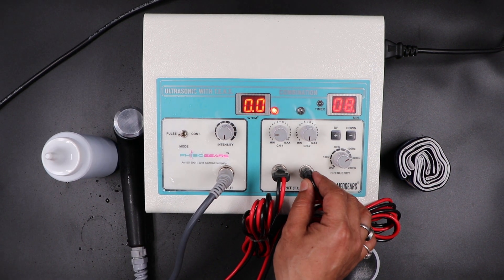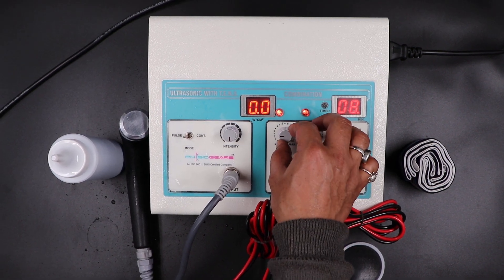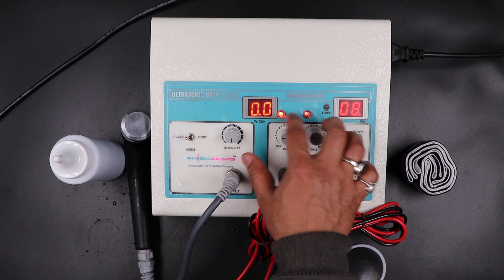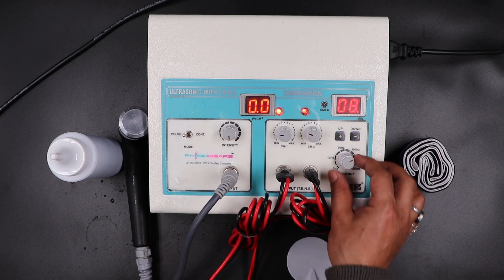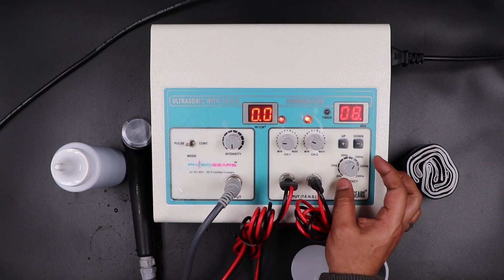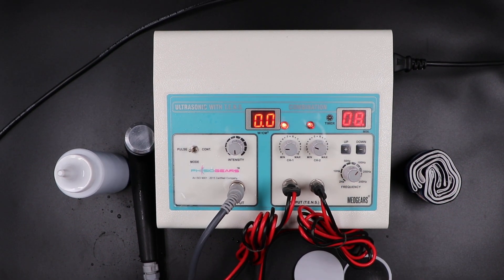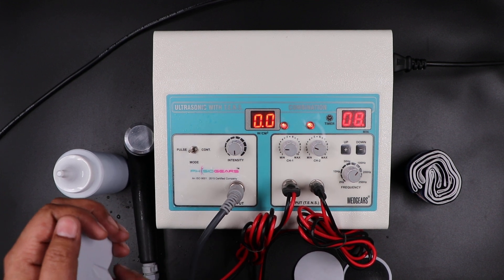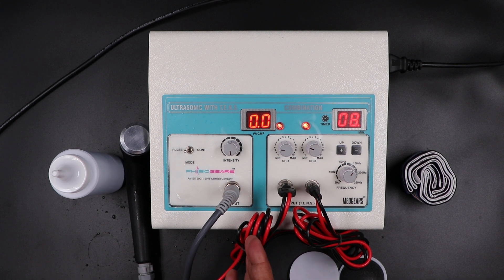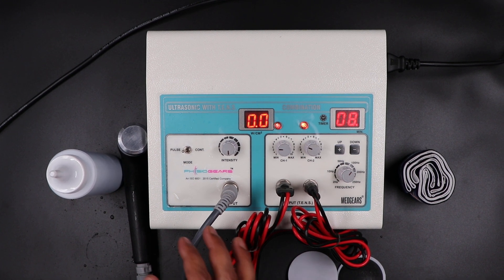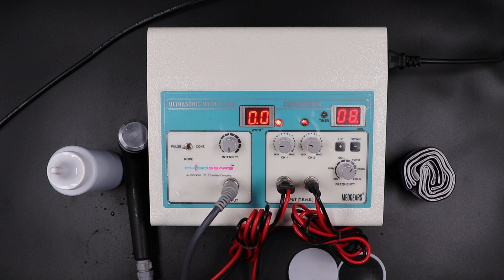Similarly, you can use channel 2 also. When you start channel 1, the indicator is blinking. Channel 2 has this indicator. This knob is for frequency. You can keep it on 100 for ideal therapy. This is a very useful device for pain relief, ultrasonic with TENS, 2-in-1 combination therapy.